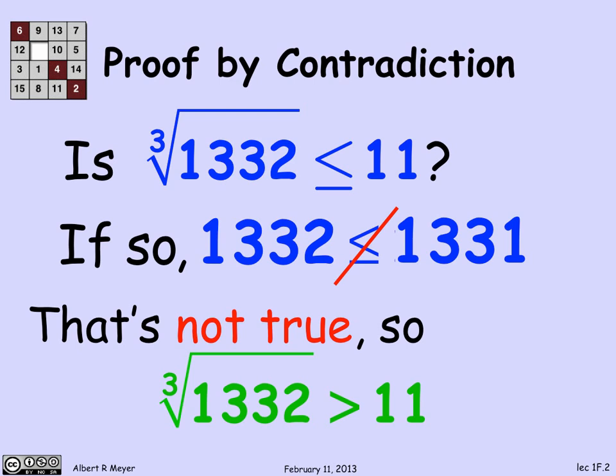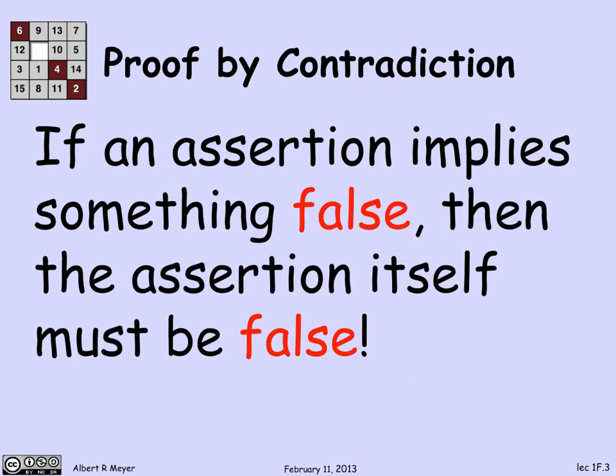And I have now precisely and unambiguously proved that the cube root of 1,332 is greater than 11, even though we never actually computed the cube root of 1,332. This is a simple example to illustrate proof by contradiction. So let's step back and say what it is in general: if an assertion implies something false, then the assertion itself must be false.